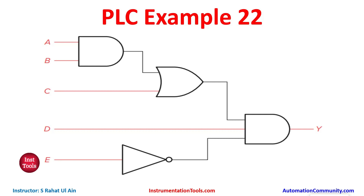Firstly we will connect inputs A and B in series, thus implementing the AND gate. Then we will connect C in parallel with AB, thus implementing the OR gate. Then we will connect D in series with the output of AB plus C. Then we will connect E as a normally closed contact in series. So let's move to EcoStruxure Machine Expert where we will draw the ladder diagram for this example.